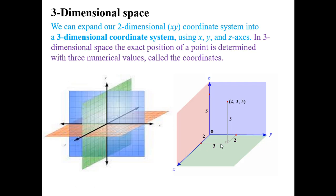Here is the three-dimensional space. We can expand our two-dimensional x-y coordinate system into a three-dimensional coordinate system using x, y, and z axes. By combining the x-y plane with one real number line perpendicular to both, we get three-dimensional x-y-z space. In three-dimensional space, the exact position of a point is determined with three numerical values called coordinates. This is the x-axis, this is the y-axis, and this is the z-axis. To locate a point, you need three coordinates: x-coordinate, y-coordinate, and z-coordinate.